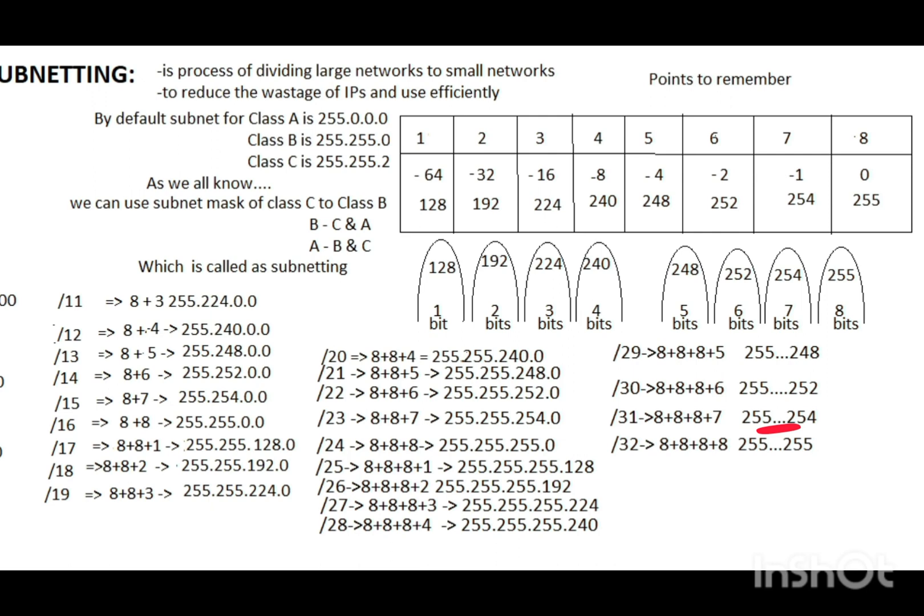Slash 32 is 8 plus 8 plus 8 plus 8, which is 32 bits. So the subnet mask value of slash 32 is 255.255.255.255 — all 255s.